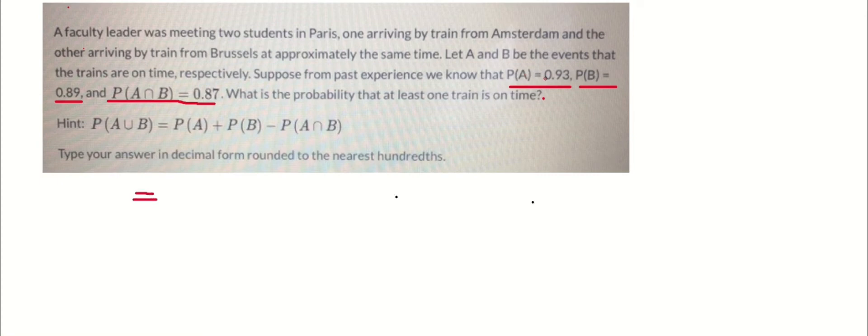The probability of A is 0.93 and we are adding that to the probability of B which is 0.89, and that is being subtracted from the probability of A intersect B which is 0.87.